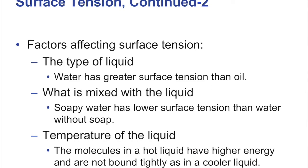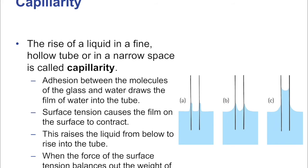Factors affecting surface tension: the type of liquid — water has much greater surface tension than oil. What is mixed with the liquid — soapy water has lower surface tension than plain water. And the temperature — molecules in a hot liquid have higher energy and are not bound together as tightly as in a cooler liquid, so at high temperatures surface tension is less well defined.